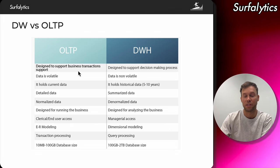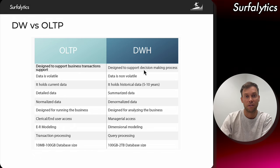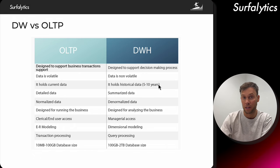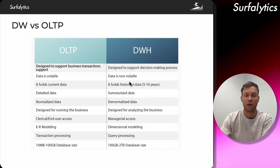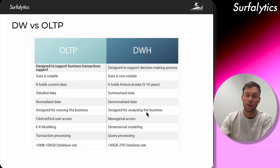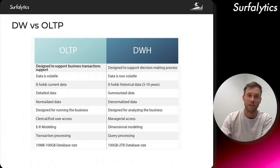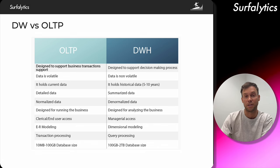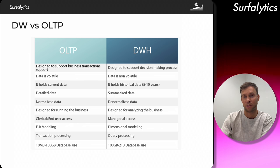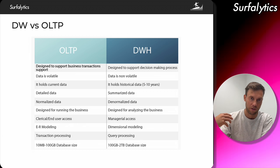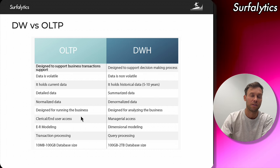OLTP is designed to support business transactions that must be very fast and can be concurrent. The data warehouse is designed for the decision-making and analytics process. In OLTP, data is volatile; in the data warehouse, it's not volatile. The data warehouse holds lots of historical data and gives you the opportunity to query it — often as aggregated data. And importantly, we don't want to store any PII — personal identifiable data like customer names or credentials — in the data warehouse.